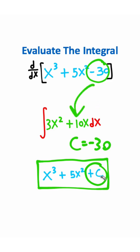So this plus c just accounts for any missing constant and if you didn't have this minus 30 right here then your c equals 0. So no matter what the original equation is you definitely want to make sure that you add a plus c.